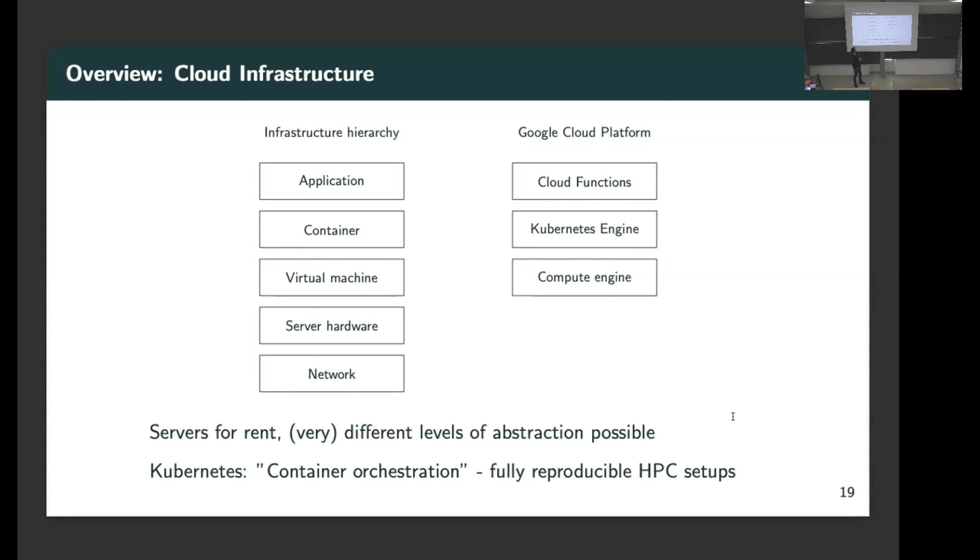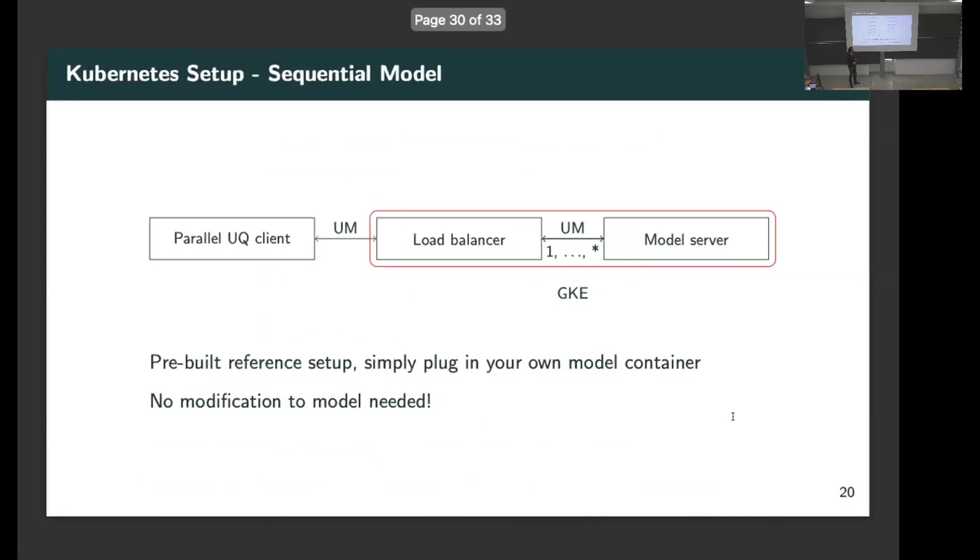So the setup that we're going for is this Kubernetes orchestrator. What we're going for is a simple way of getting essentially your model to run as an HPC environment. We instruct Kubernetes to start multiple instances of the model. In front of this, we have a load balancer, which just makes sure that from the outside, you can talk to this cluster. You can simply tell it now give me a model evaluation, please, and it's going to take care of distributing the load across independent nodes in the background. The interesting thing is that with this container orchestrator, we can provide this as a reference setup. You can just take the specification file that we write for this Kubernetes system and replace the name of the container that you want to run.